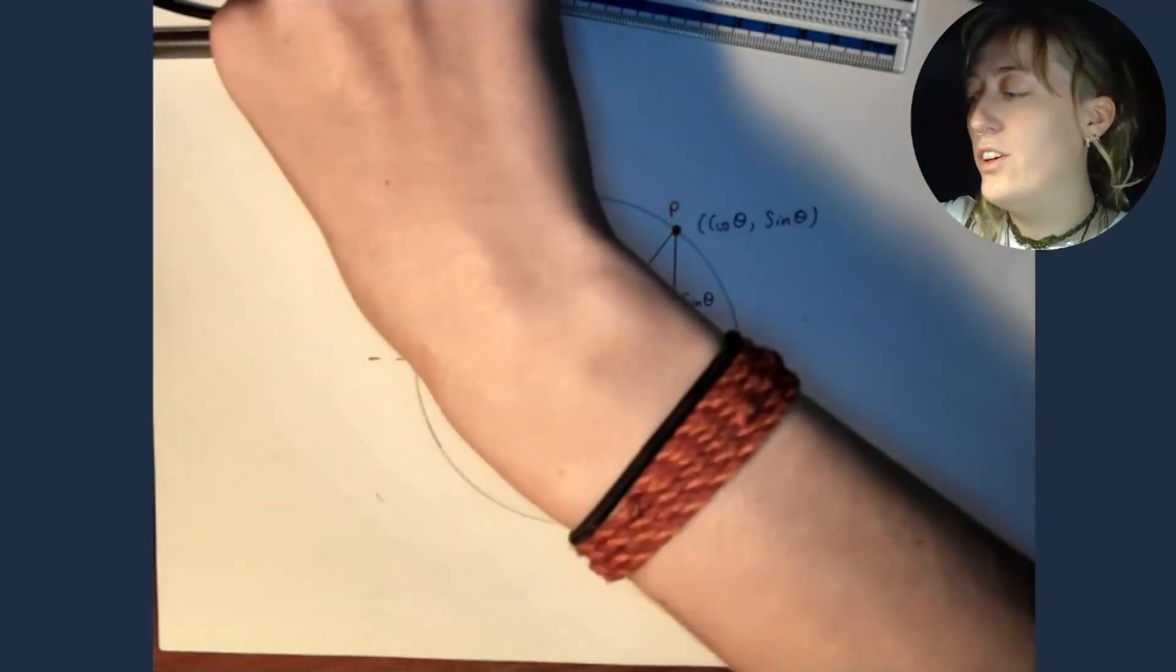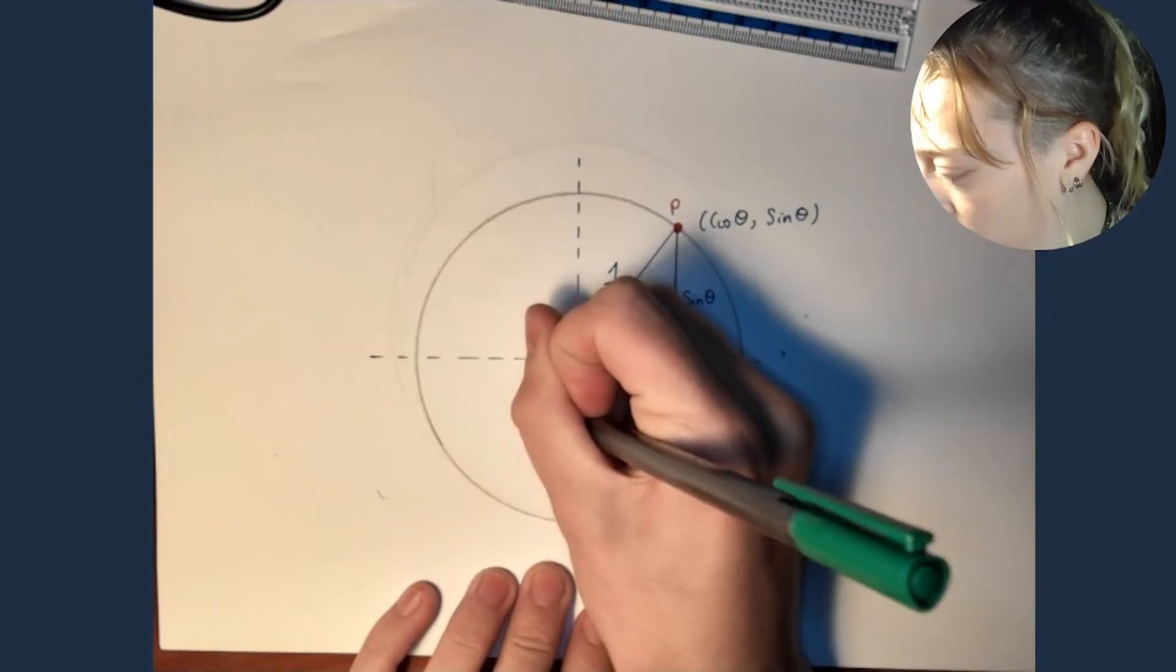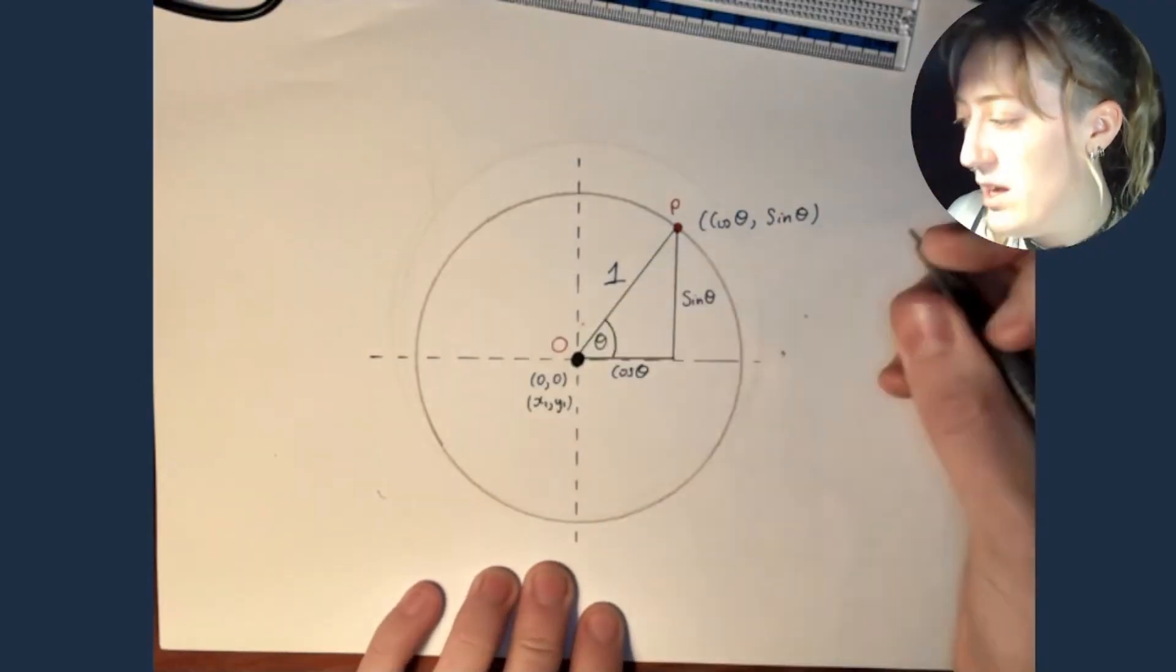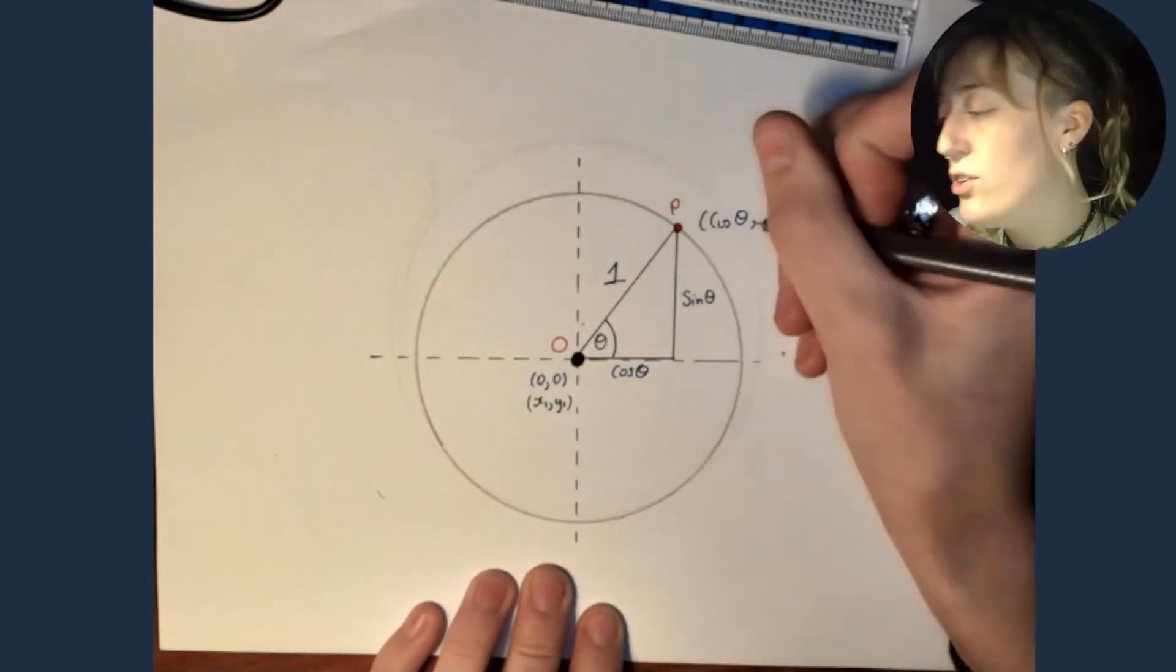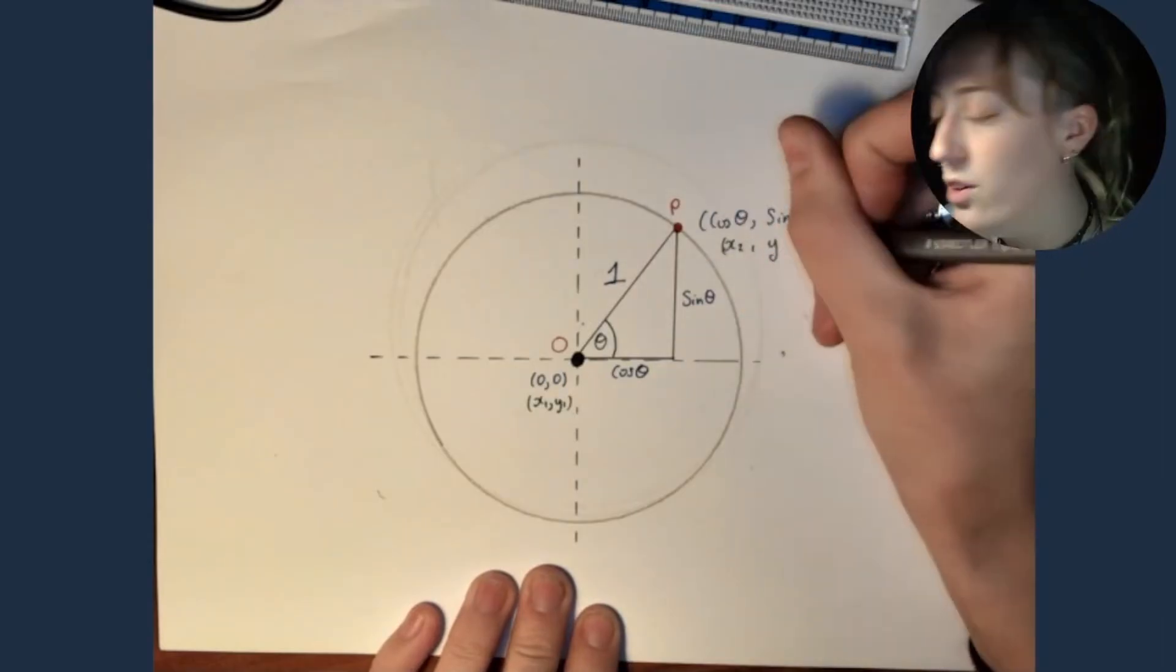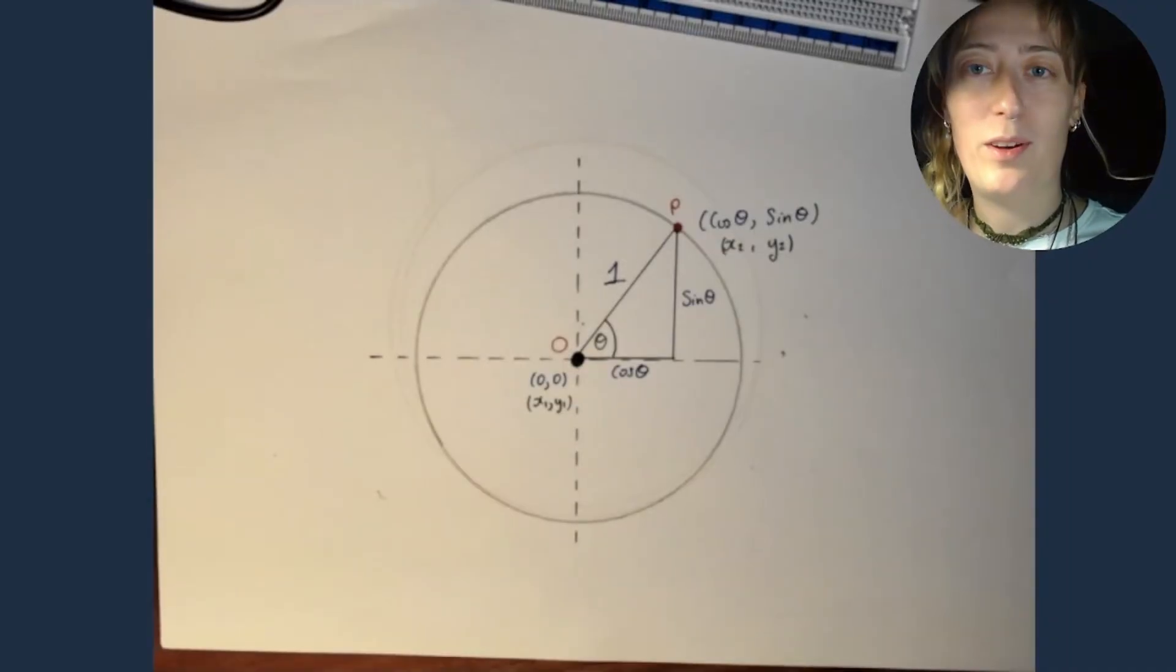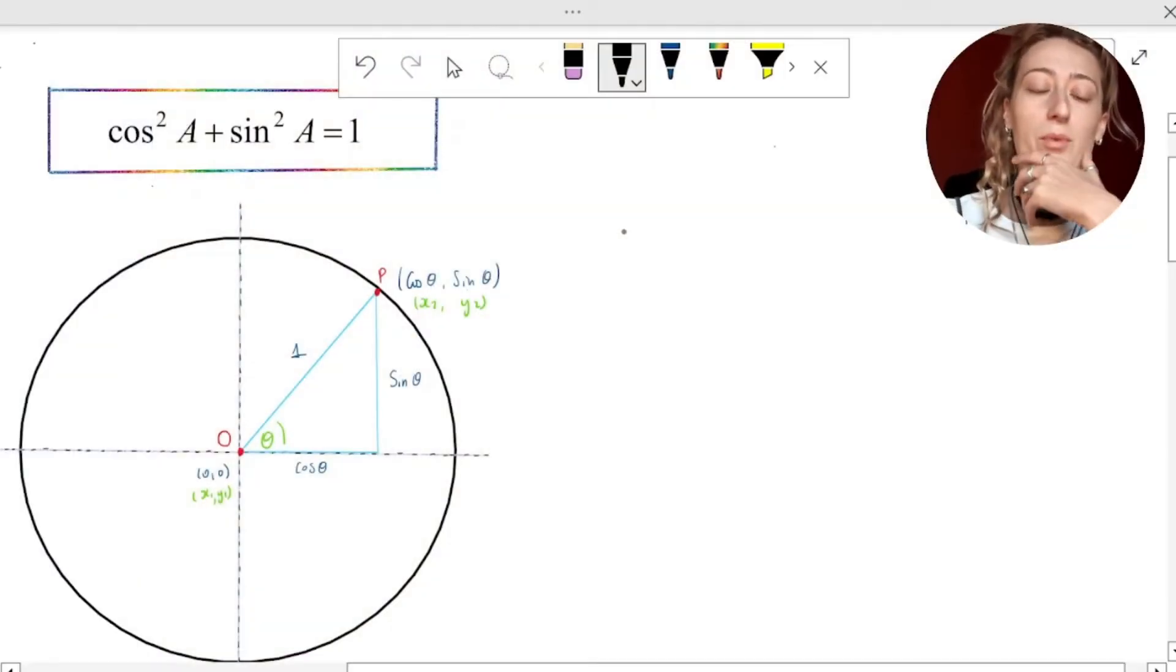Now, the last thing we need to do is we just need to mark in the point zero, zero. We can call it x1, y1. And the point P, I'm going to call these x2, y2. And that's going to become clear now as we do the mathematical part of the proof. Let's now get on with the mathematical part of the proof.